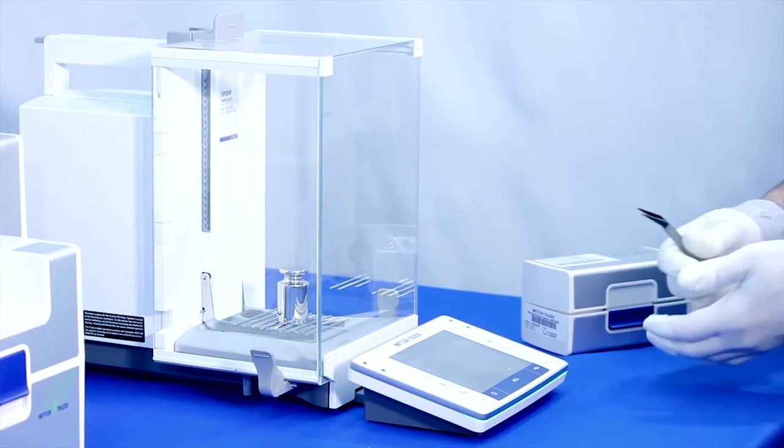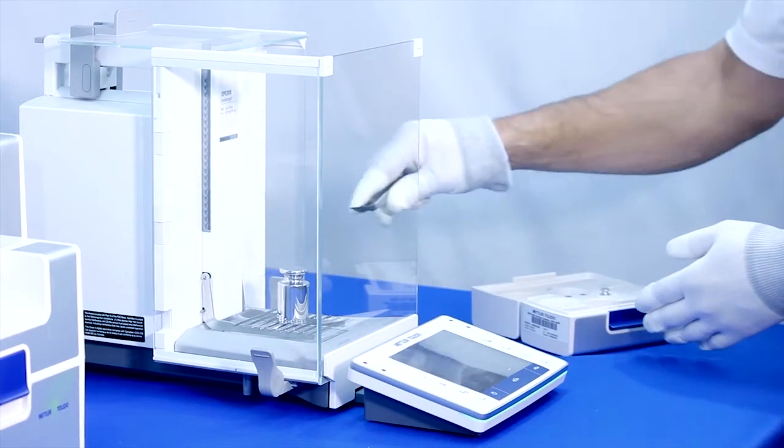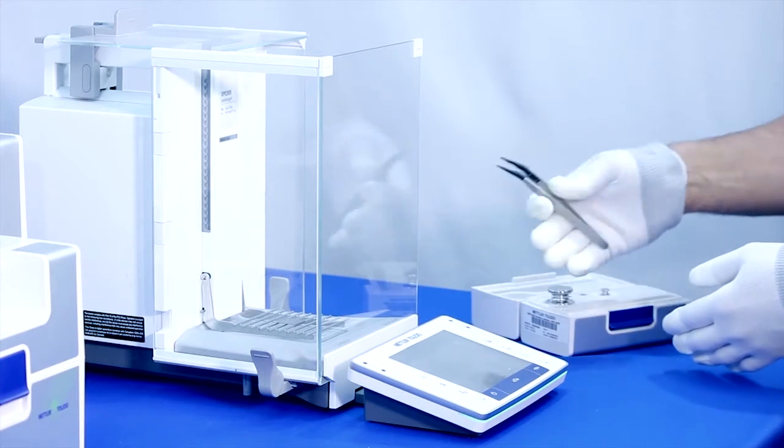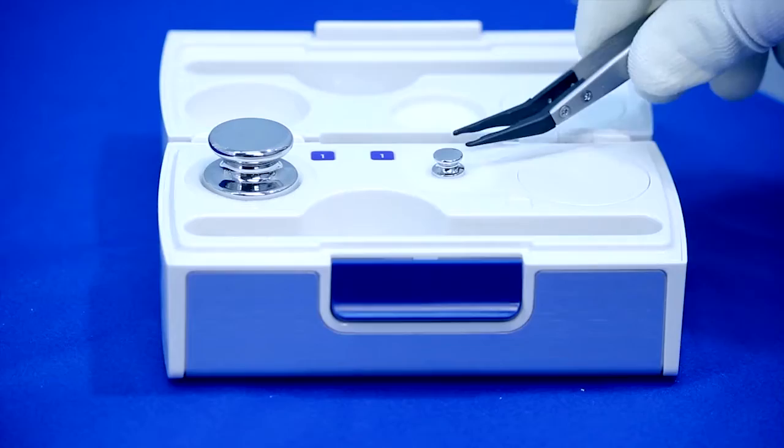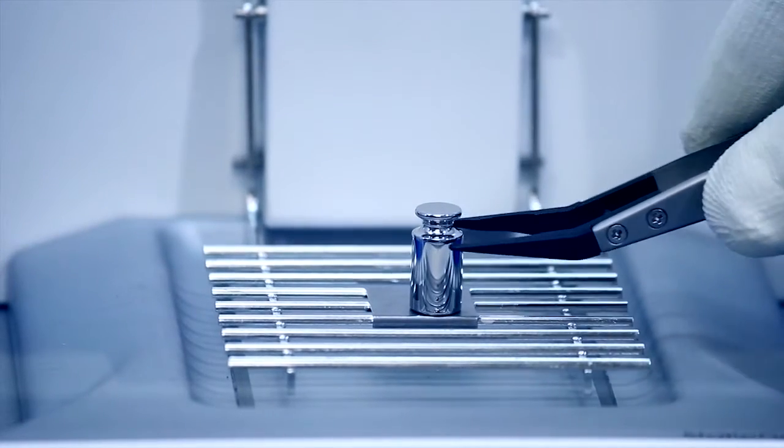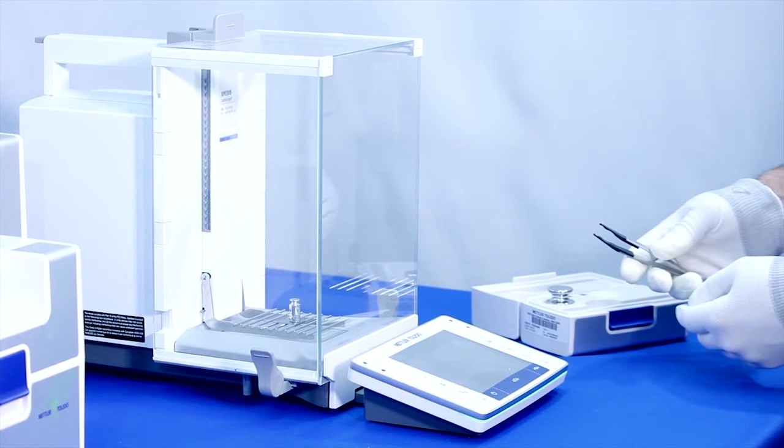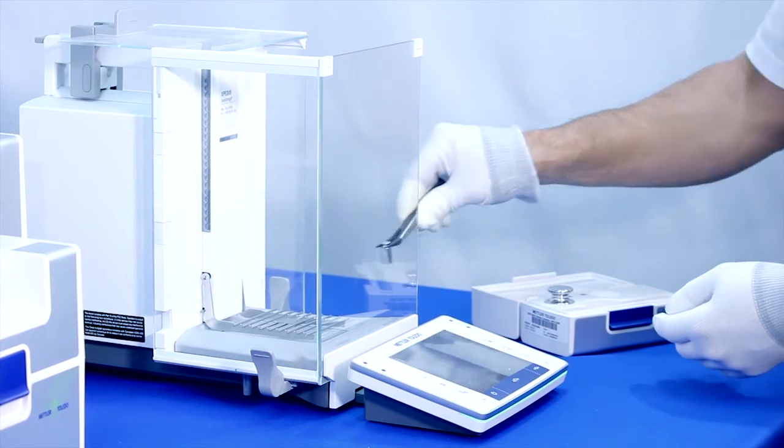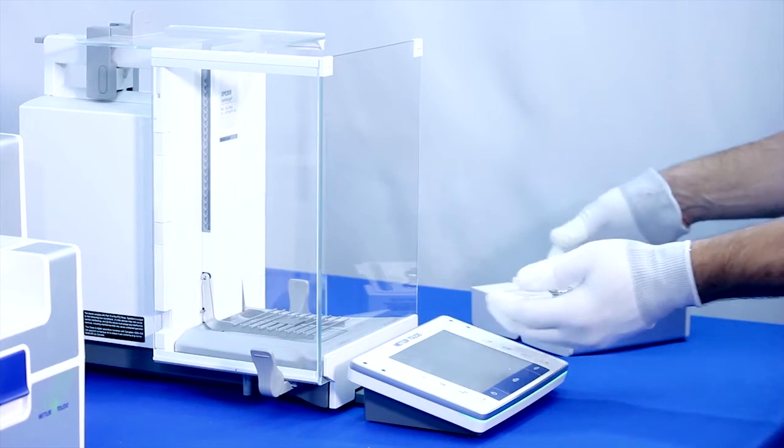Mettler Toledo test weights arrive calibrated from Columbus Ohio, home of one of our 14 ISO 17025 accredited mass laboratories located around the globe. However, incorrect handling of weights can instantly ruin their accuracy and change their conventional mass value or CMV. To avoid changing the weight's conventional mass value, let's review five simple do's and don'ts of weight handling.